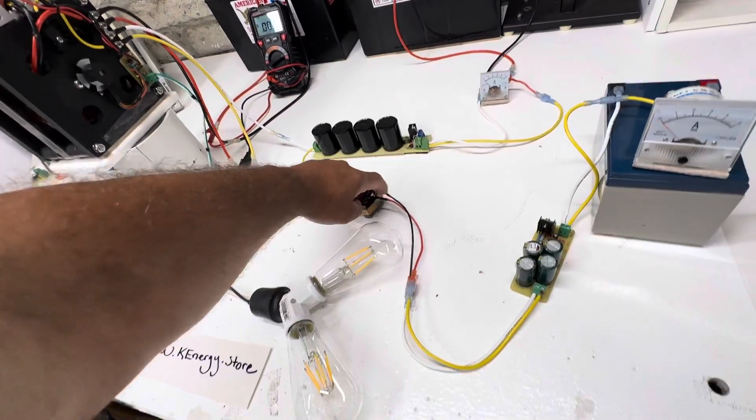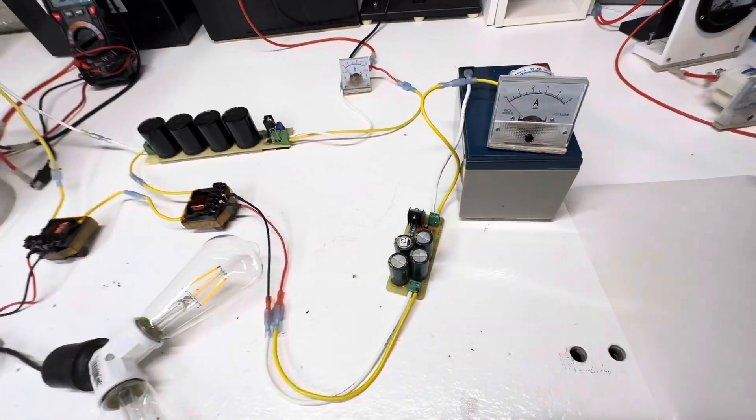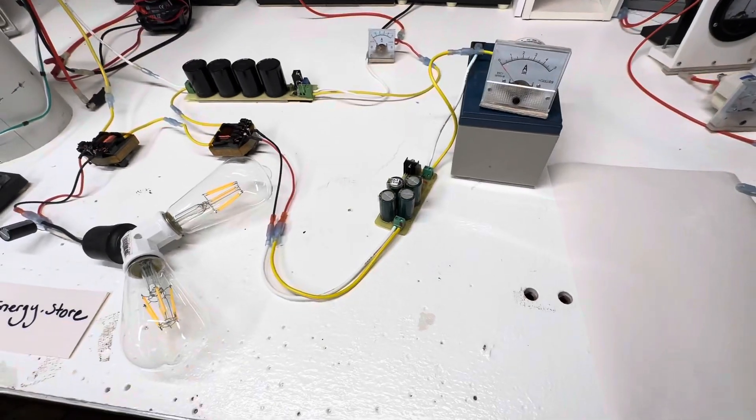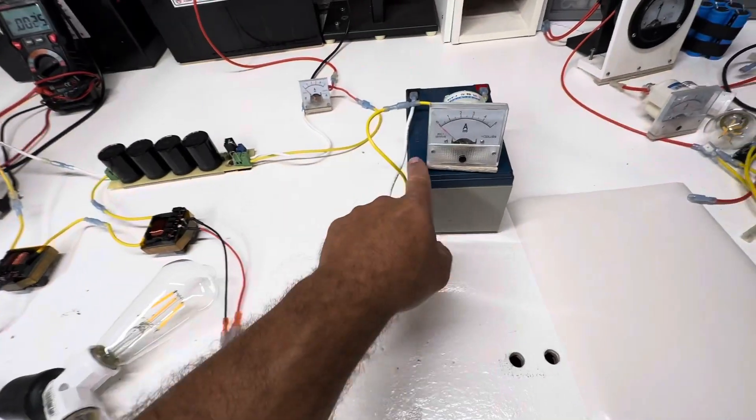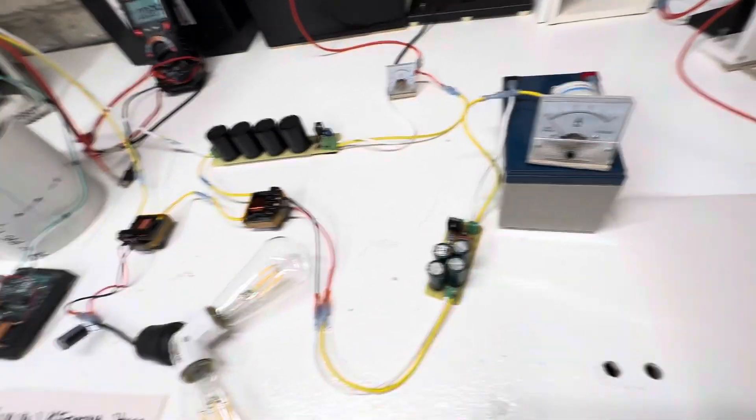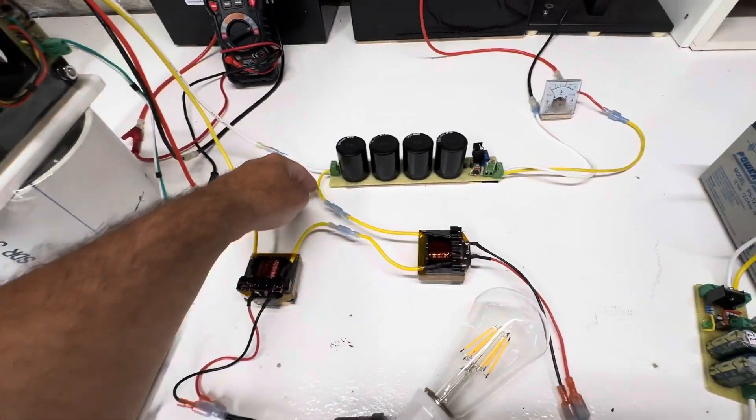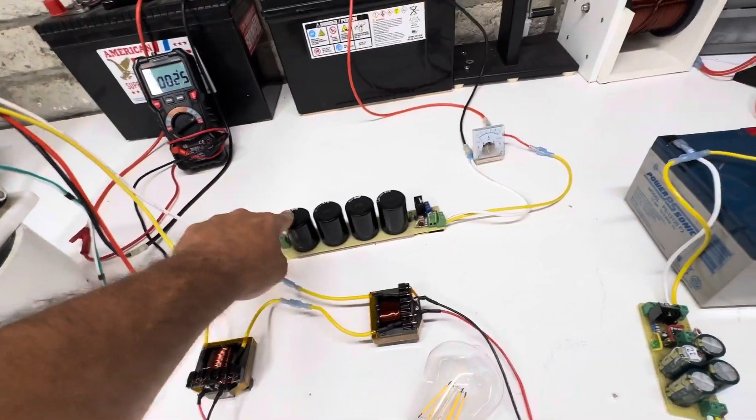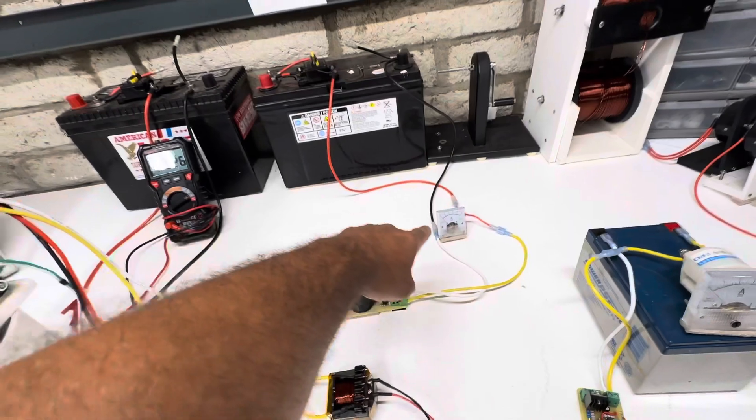So this one, the secondary is rectified and then it goes into a little cap dump. And the cap dump is charging this battery. And then after this, in series, it goes into this main cap dump, which goes through the ammeter.